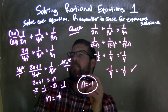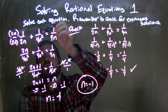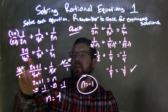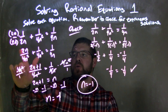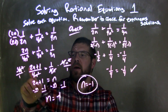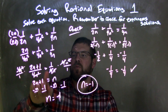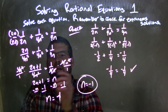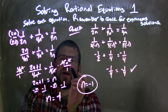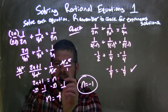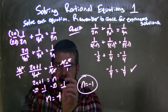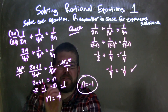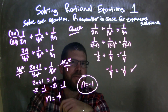Let's recap. We were given 1 over 2n plus 1 over 4n squared equals 1 over 4n. I rewrote this to have the same base — 4n squared — giving me 2n over 4n squared, then combined them to get 2n plus 1 all over 4n squared. I then multiplied both sides by 4n squared, eliminating the denominator on the left and most of the right, leaving just n. Subtracting 1 and n from both sides gives n equals negative 1.